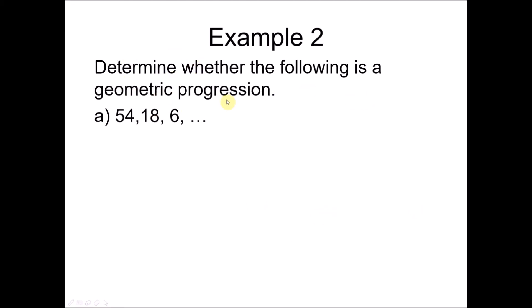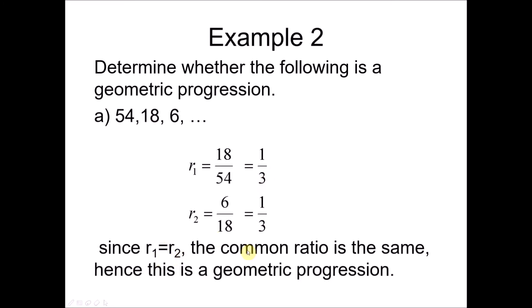Example 2: determine whether the following is a geometric progression. We don't know whether this is a GP or not. To determine, we find the common ratio for the first two terms: 18 divided by 54 gives 1 over 3. If this is a GP, the value of r will be the same throughout. So we find the ratio for the next two terms: 6 divided by 18 also gives 1 over 3. Since r1 equals r2, the ratio is the same, hence they have a common ratio — this is a geometric progression.